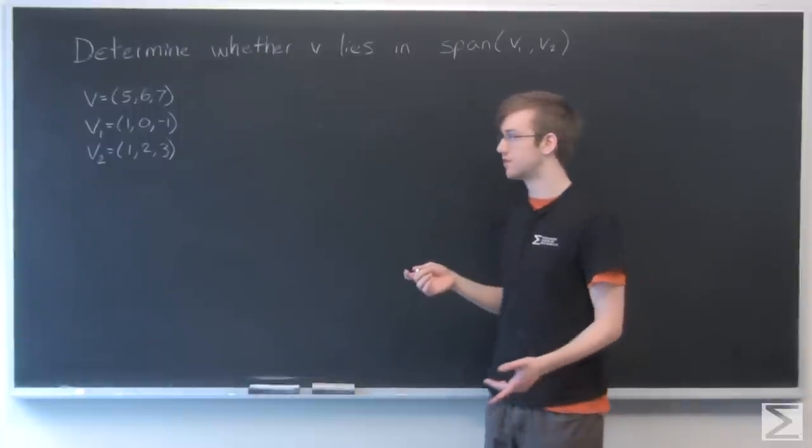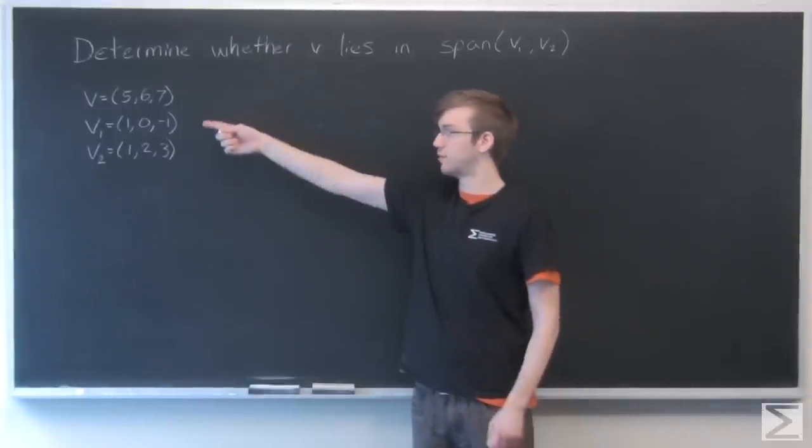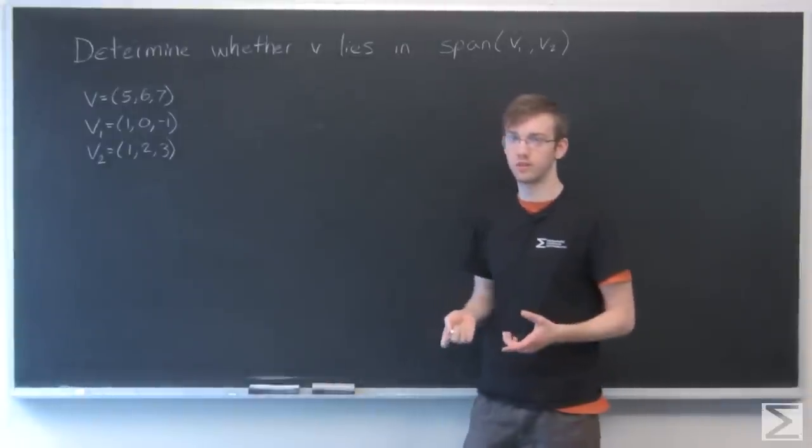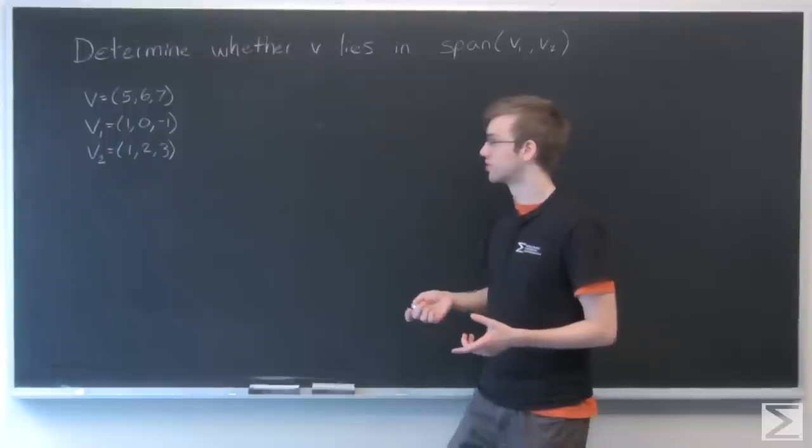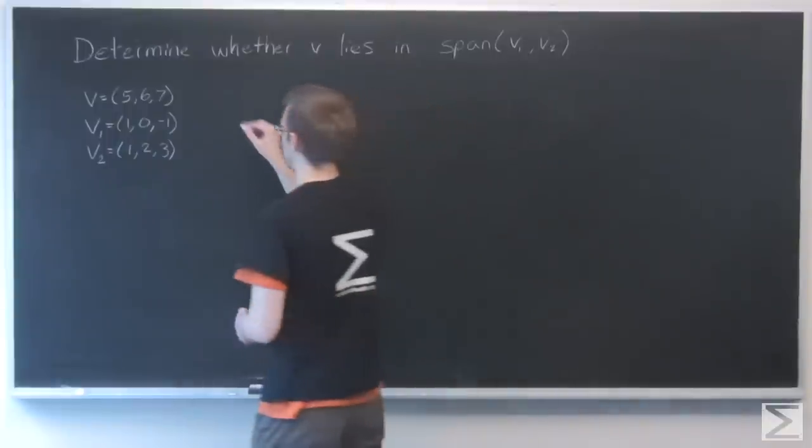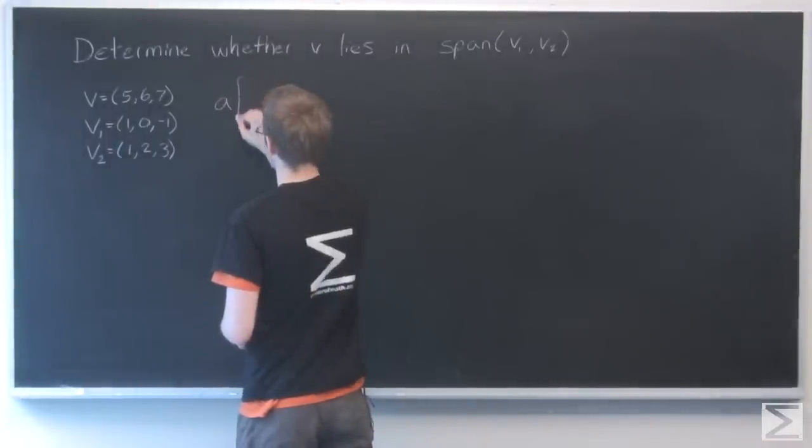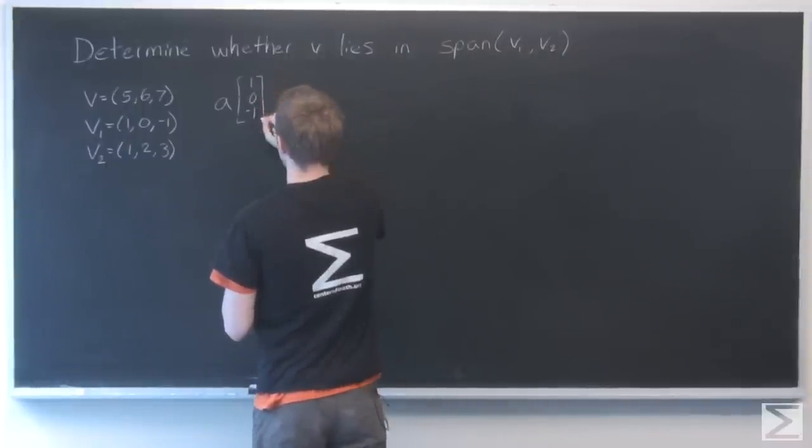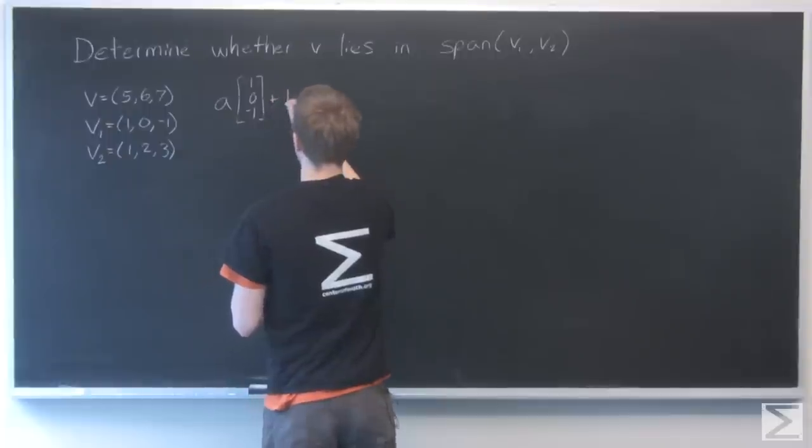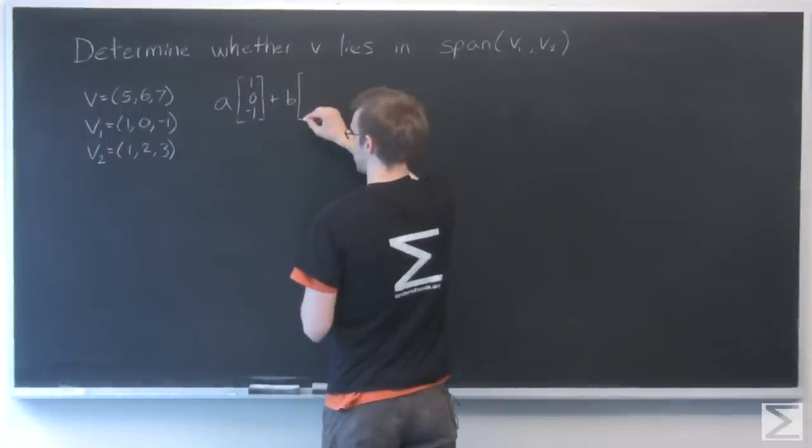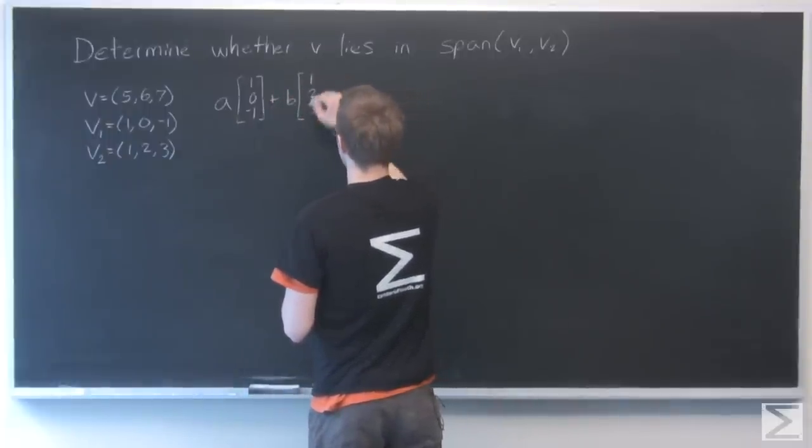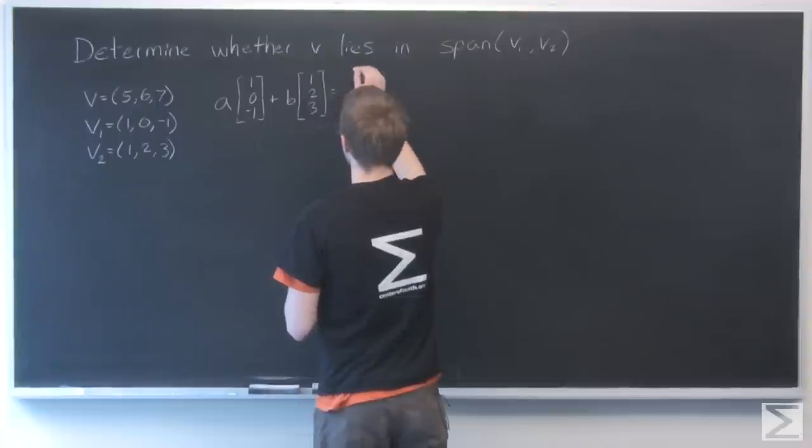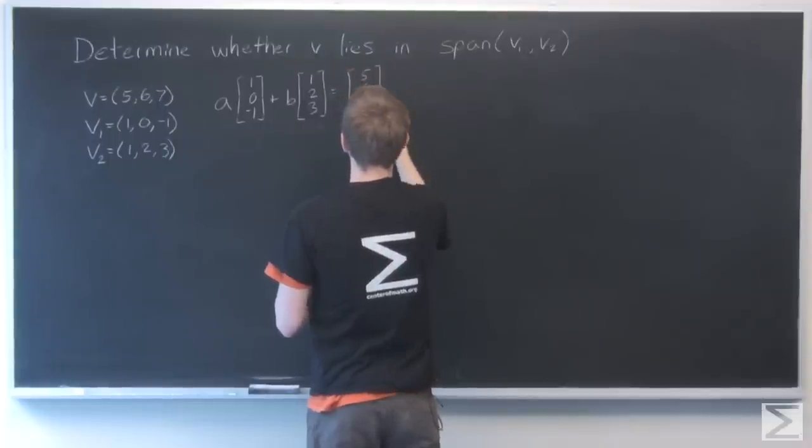What this basically means is can we get v from a linear combination of v1 and v2? So we can set that up where we have a constant A multiplied by v1 plus a constant B multiplied by v2 equaling 5, 6, 7.